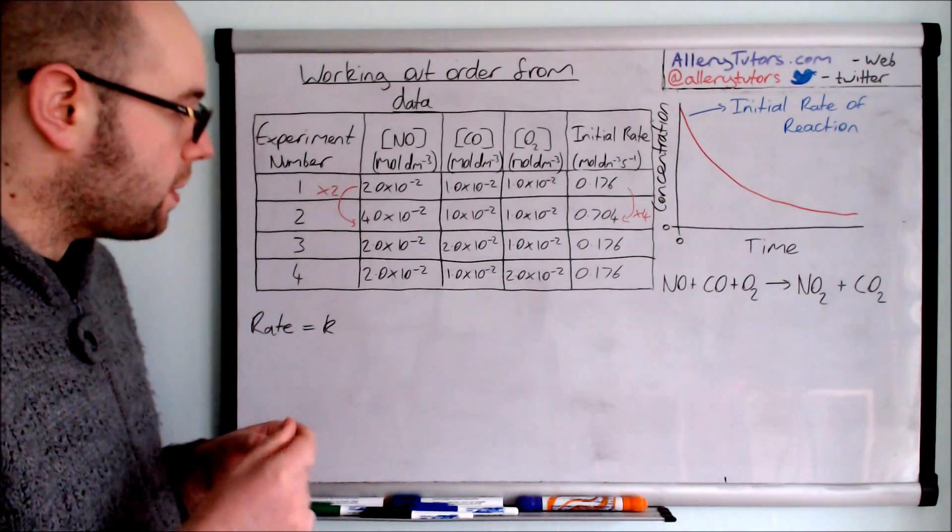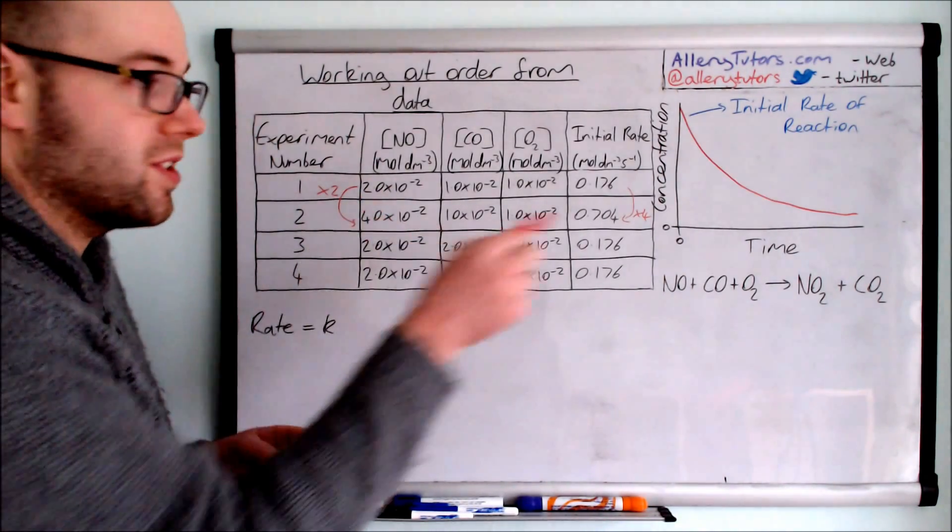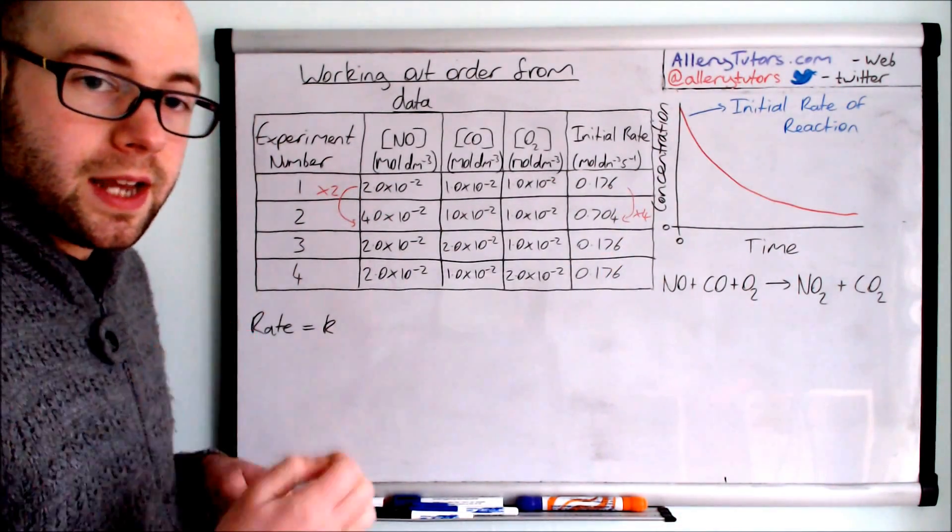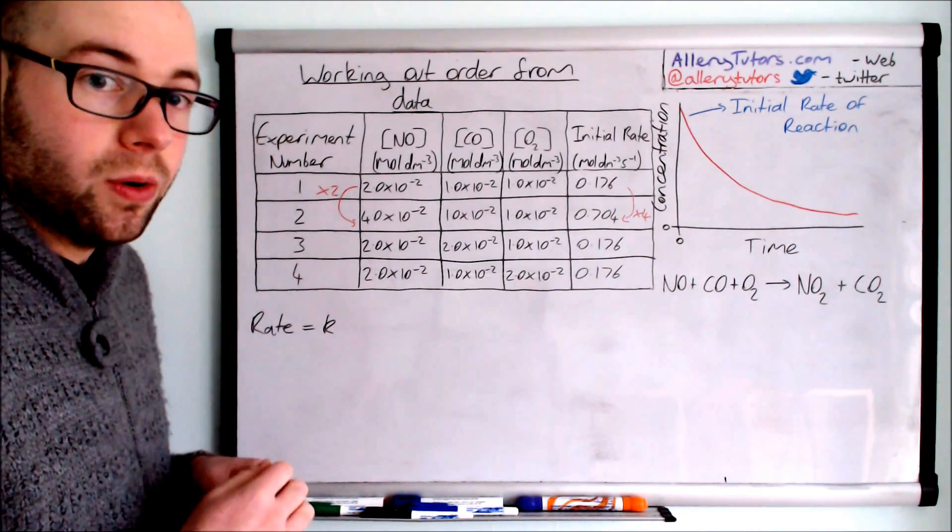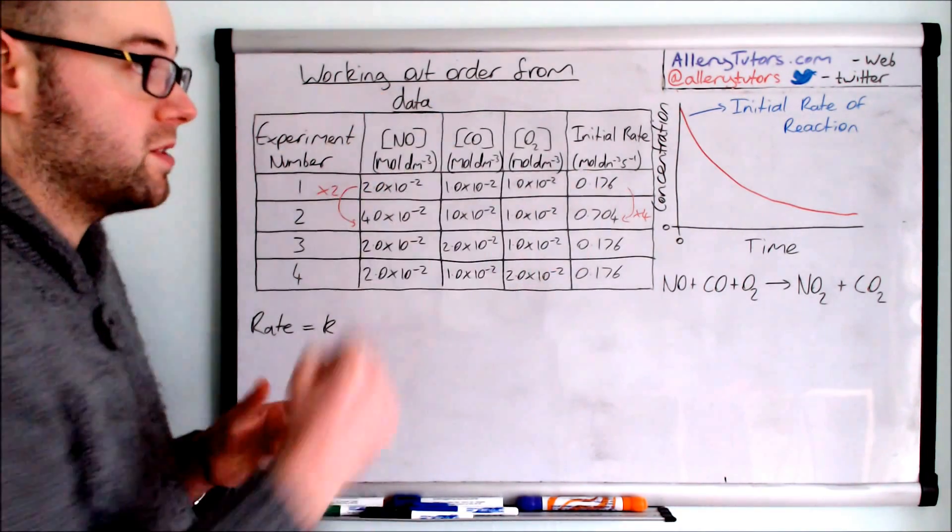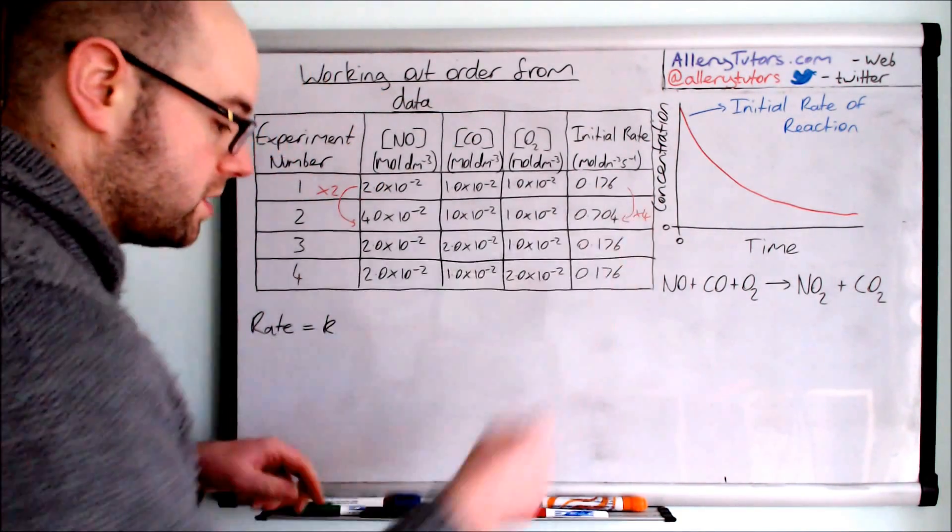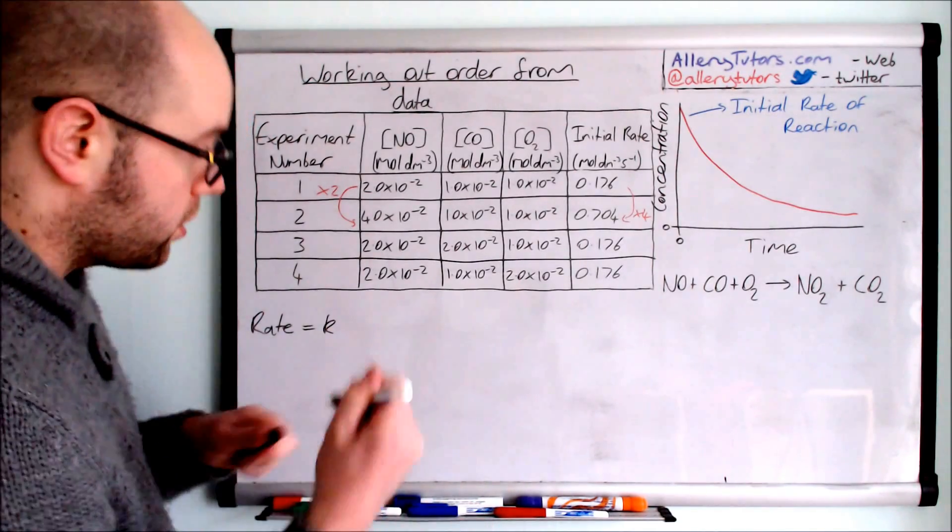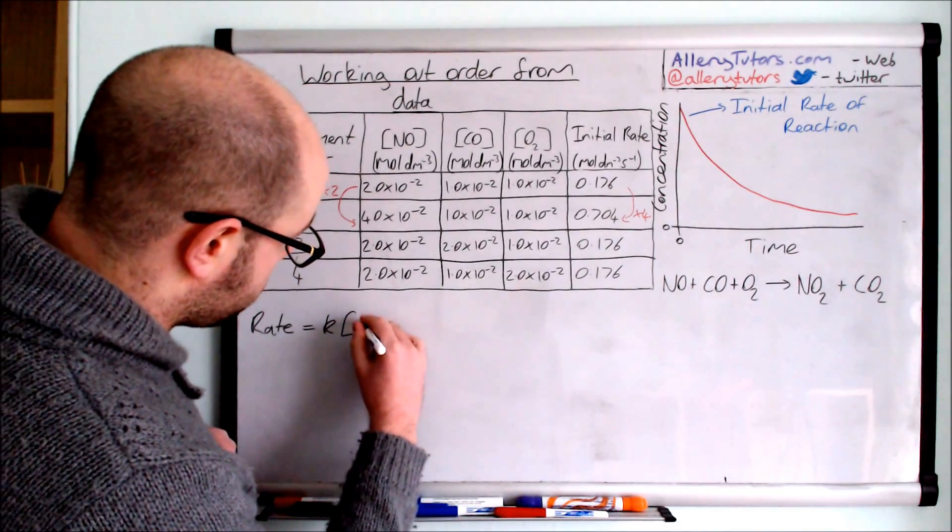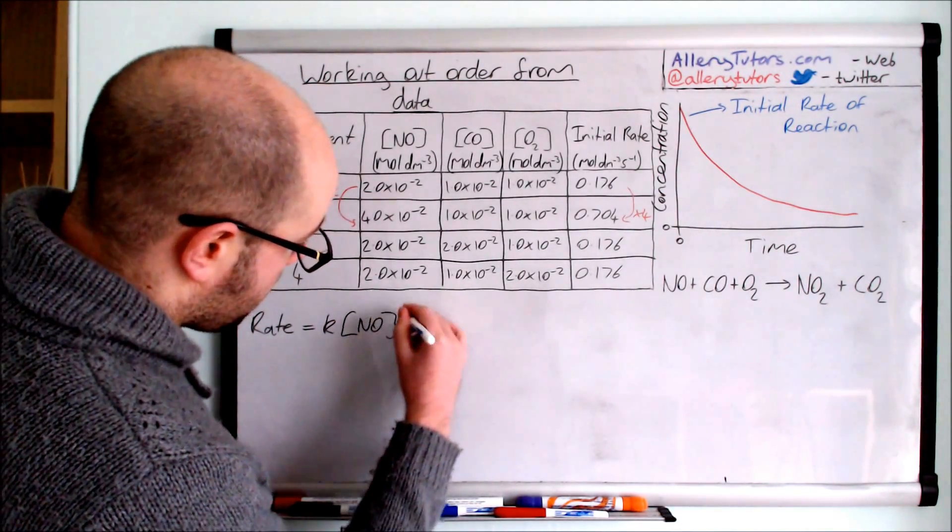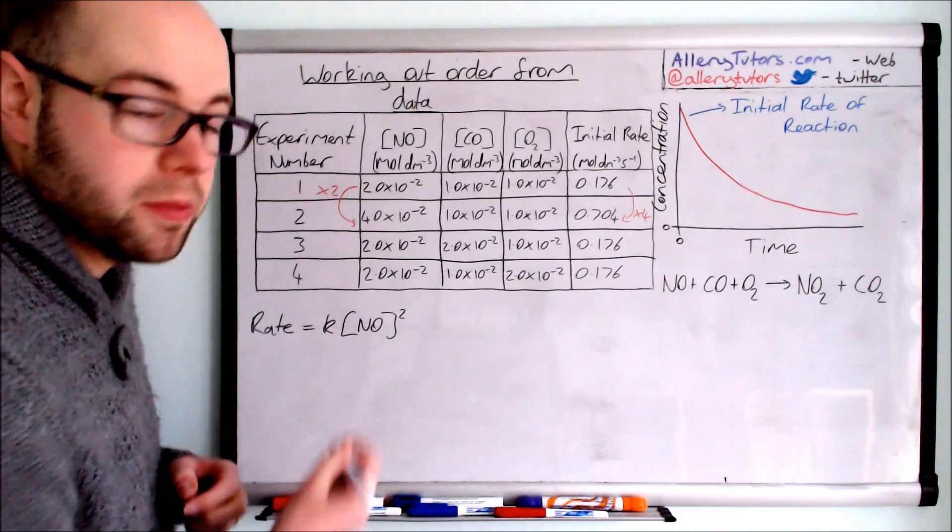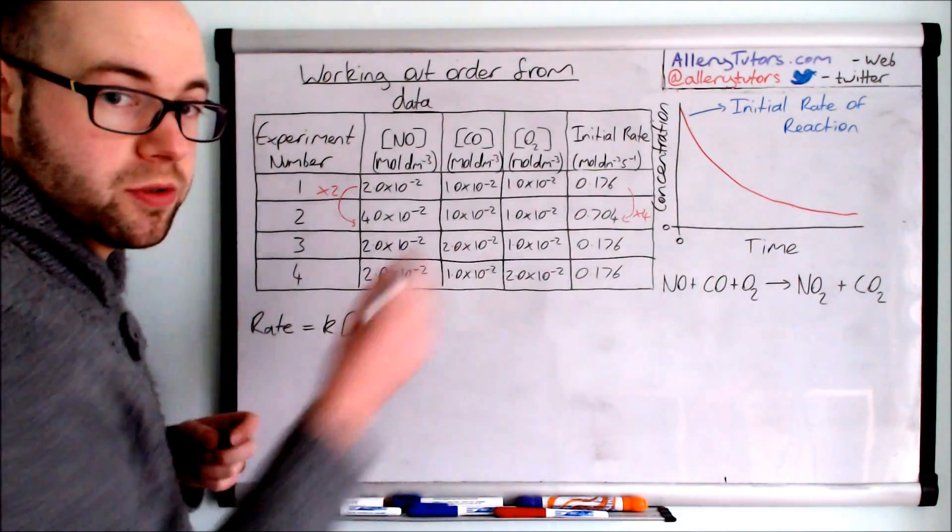Because when we double the concentration and the rate quadruples we say that nitrogen monoxide is second order with respect to the rate. So the rate increases at second order. We're going to put concentration NO and we're going to put a little two on the top. When this doubles this quadruples.